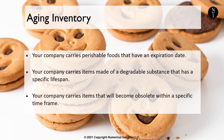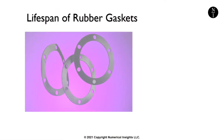Consider the following examples of aging items. Your company carries perishable foods that have an expiration date. Your company carries items made of a degradable substance that has a specific lifespan. Your company carries items that will become obsolete within a specific time frame.